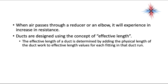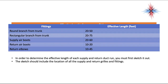Ducts are designed using the concept of effective length. The effective length of a duct is determined by adding the physical length of the ductwork to the effective length values for each fitting in that duct run. Here are some effective length examples: a round branch from a trunk line has an effective length of 20 to 50 feet; supply air boots 20 to 60 feet; return air boots 10 to 20 feet; return elbows 10 to 45 feet, depending on how tight the elbow is.